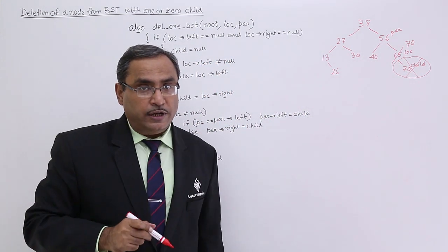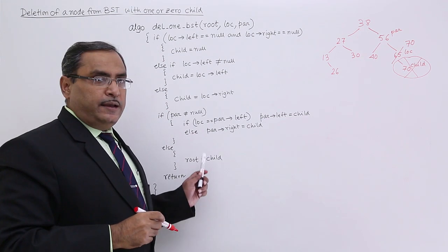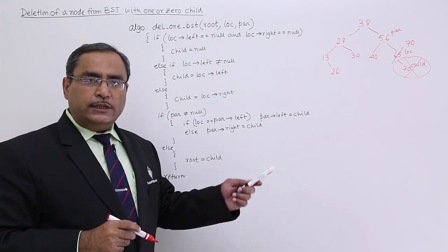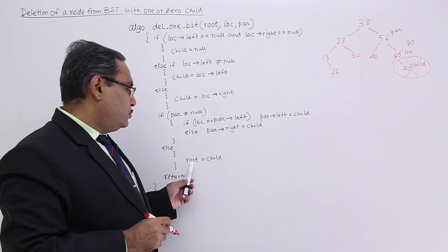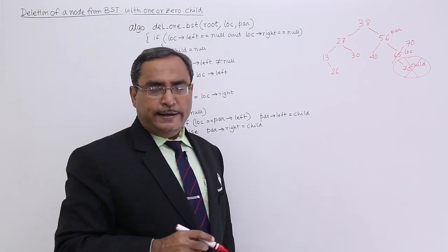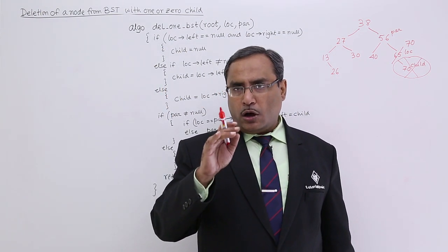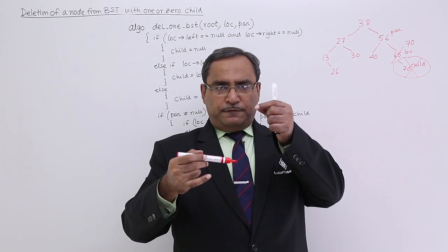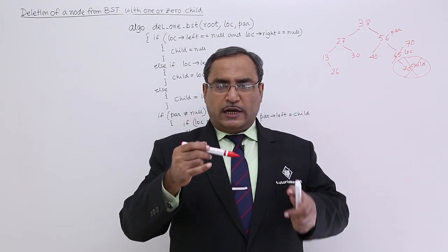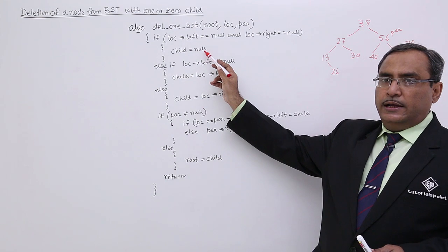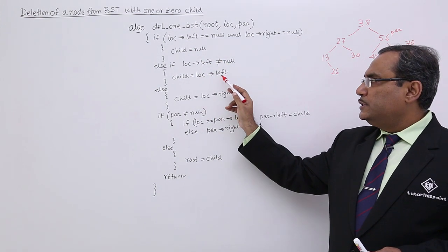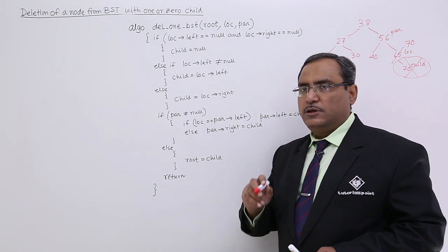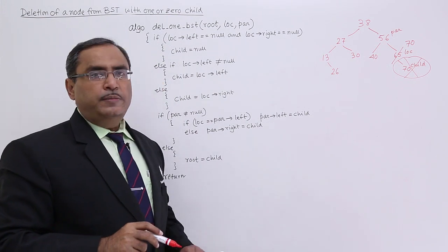Otherwise, if par is null, the parent does not exist, meaning loc is at the root. In that case, root is set to child and we return. So whenever we are deleting the root (loc), child comes up in its place. That is why we first determine child as either null, loc→left, or loc→right, and then child is placed at the position of loc. This is how the algorithm works.